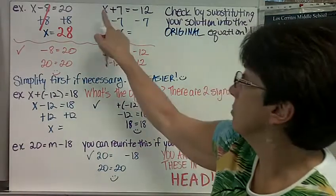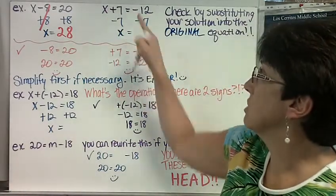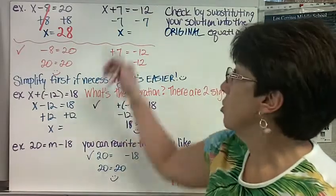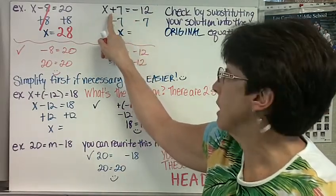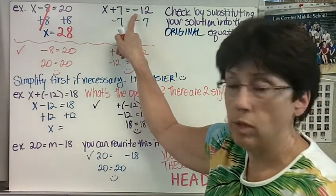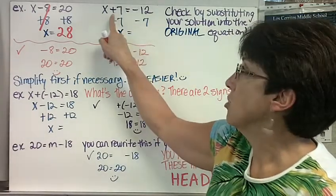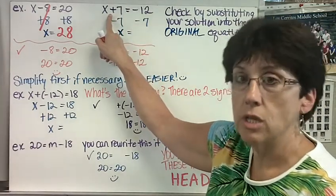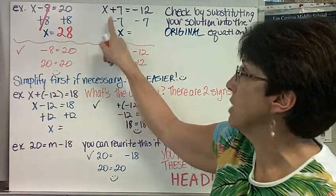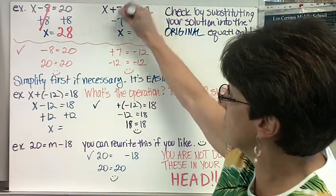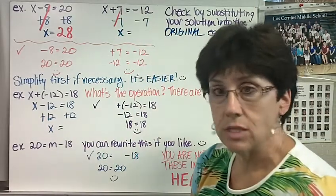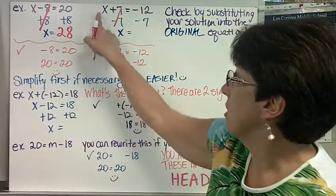Let's do another problem. x plus 7 equals negative 12. So yes, there are two signs here, but this is the only operation, plus. This is telling you negative 12. It's not an operation. So the operation is addition. The opposite or inverse would be subtraction. Subtract 7 from both sides. Minus 7 and positive 7 make 0. You just cancel them out. The x, the equal sign gets lined up.